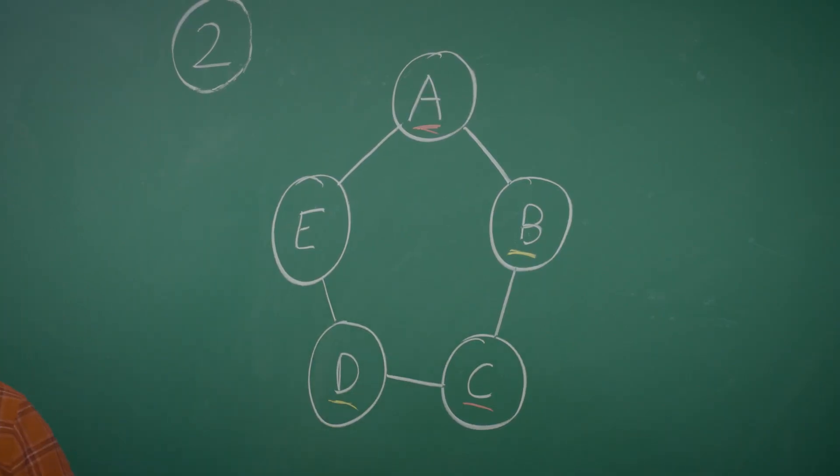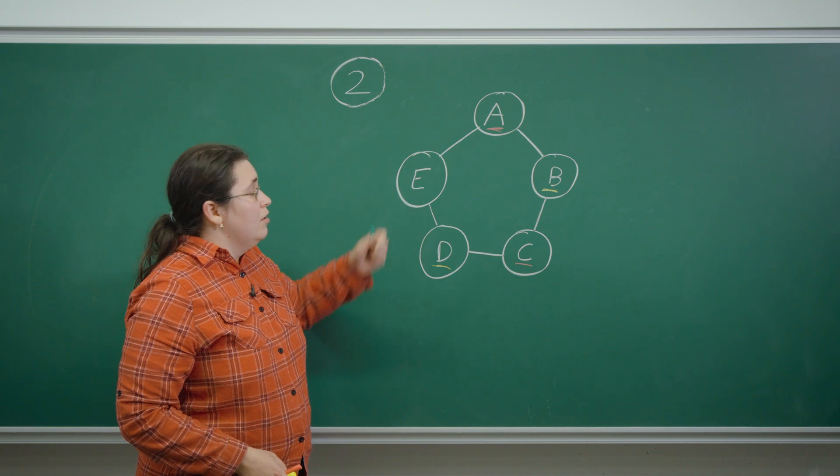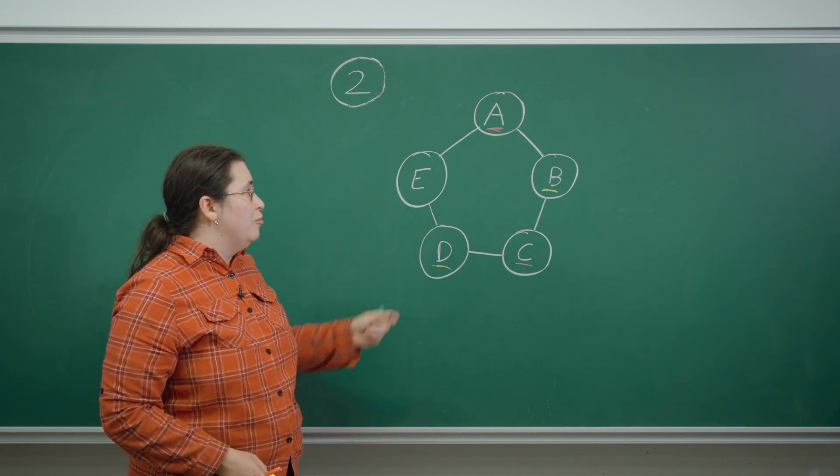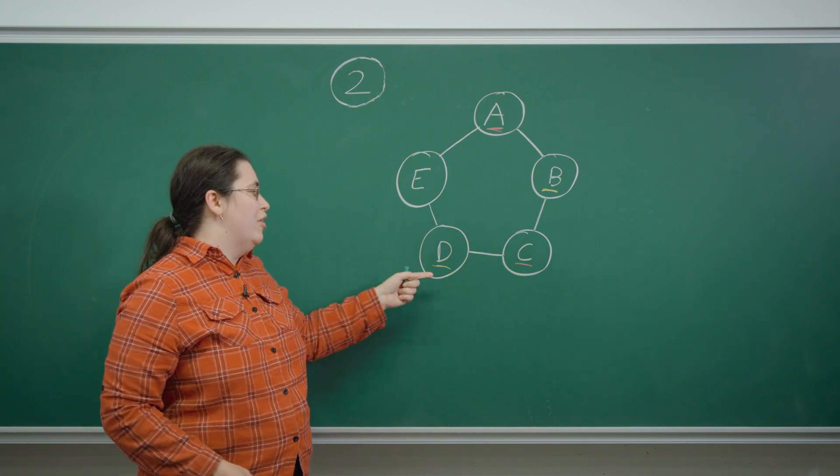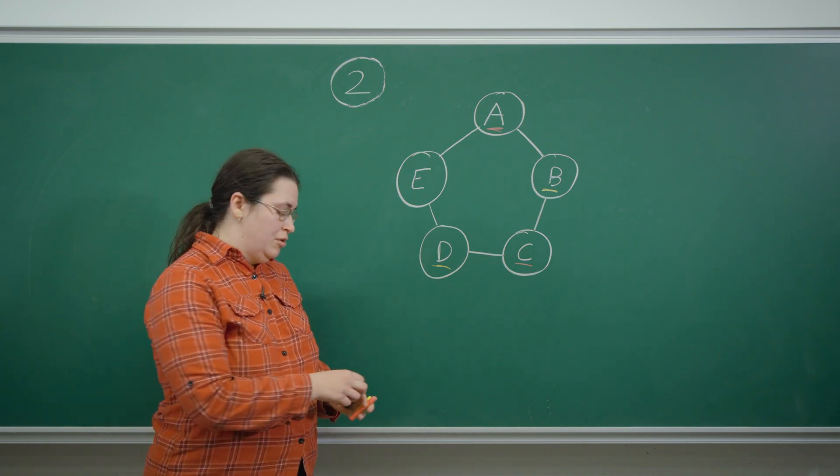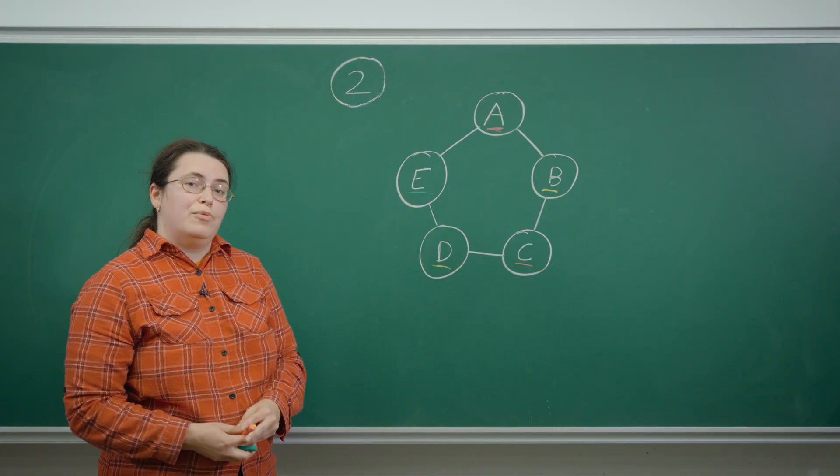Indeed, the coloring will work if I make E green, because green is different from both red and from yellow. So I've come up with a possible coloring using three colors that respects the rules.